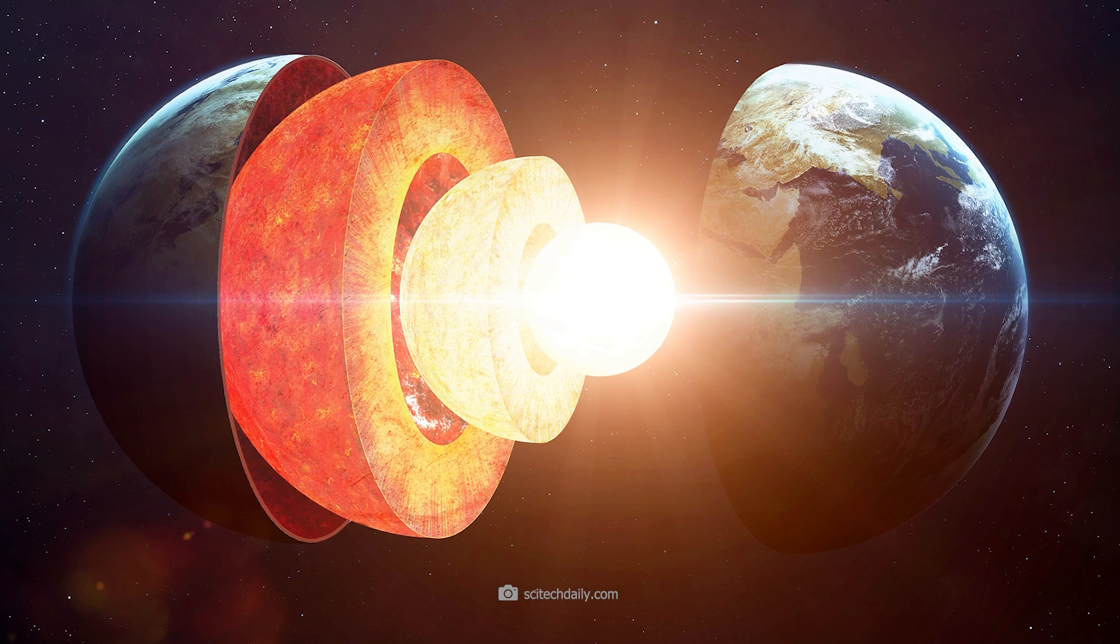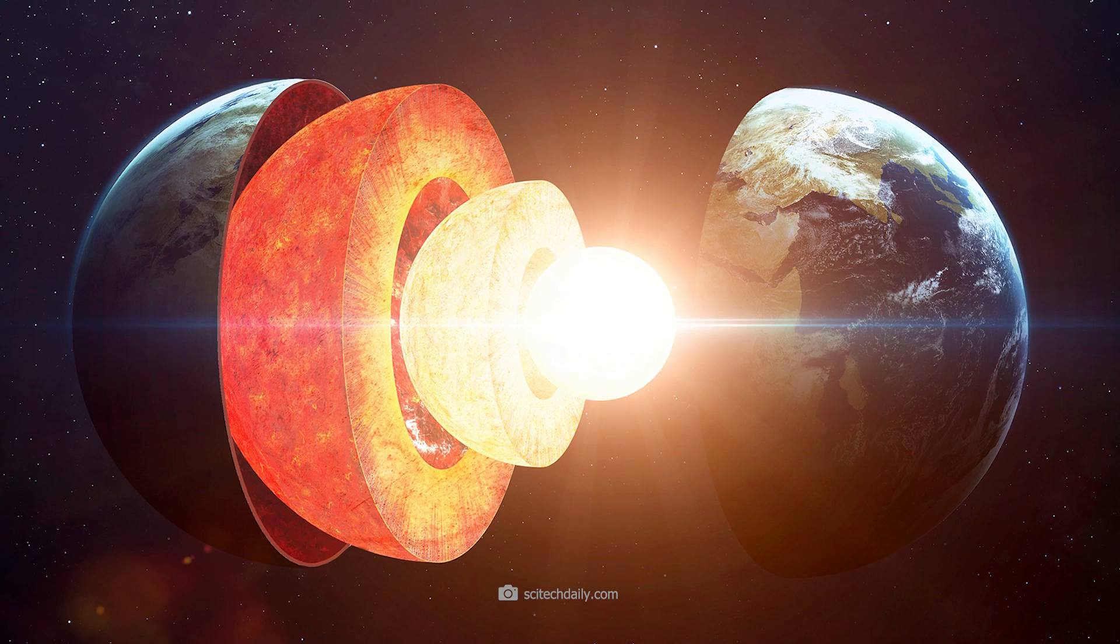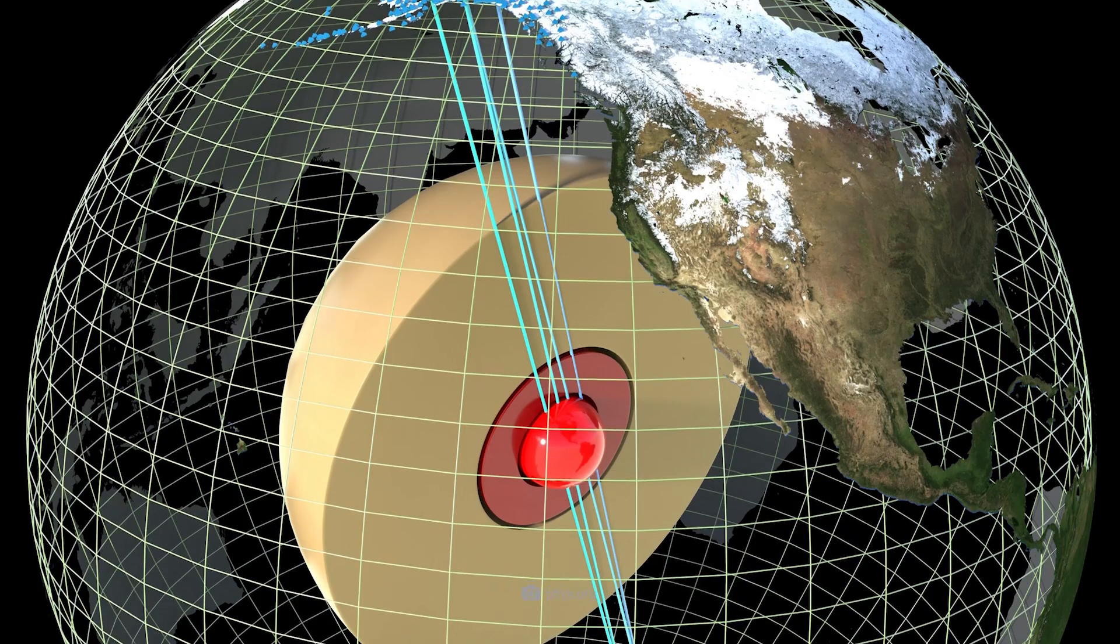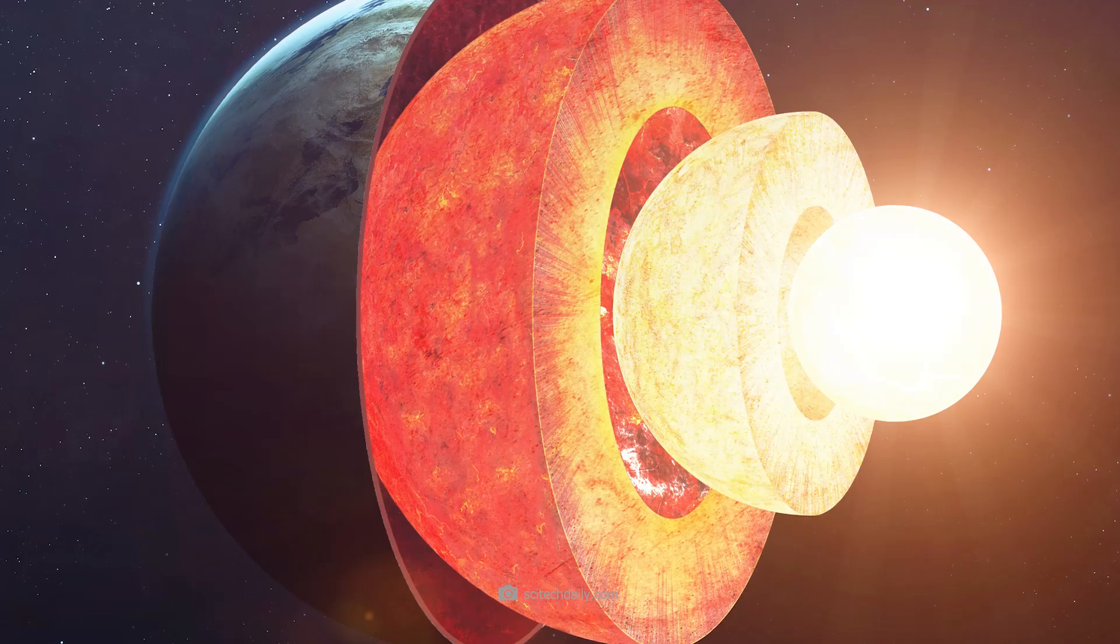The core of iron and nickel in the innermost becomes solid due to the high pressure. In 1936, researchers again found that seismic waves reflected off the inner core, indicating a transition from a liquid to a solid state.